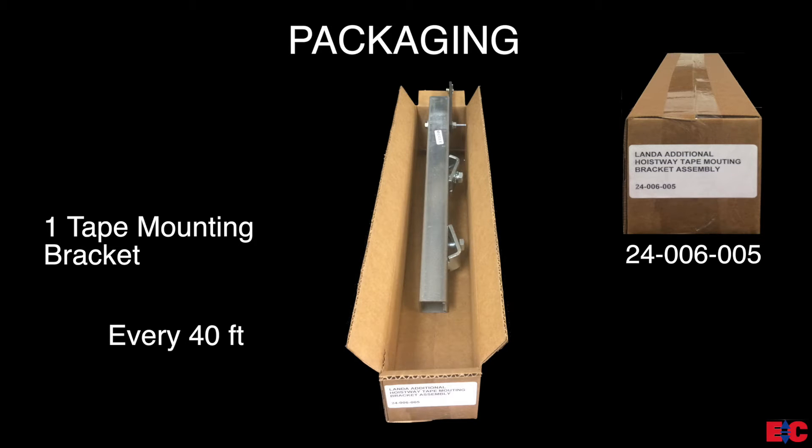24-006-005 contains one intermediate tape mounting bracket that is used anywhere in between the top and bottom mounting brackets. This bracket is to help maintain stability for longer hoist ways, and will be provided for every 40 feet. Note that these brackets will only be sent if the hoist way exceeds 80 feet in length.